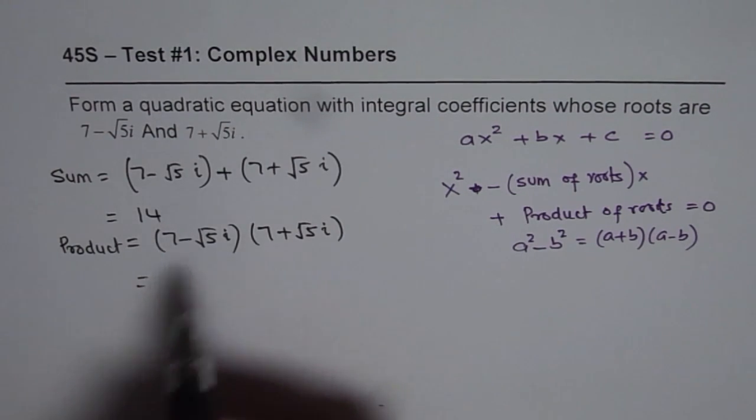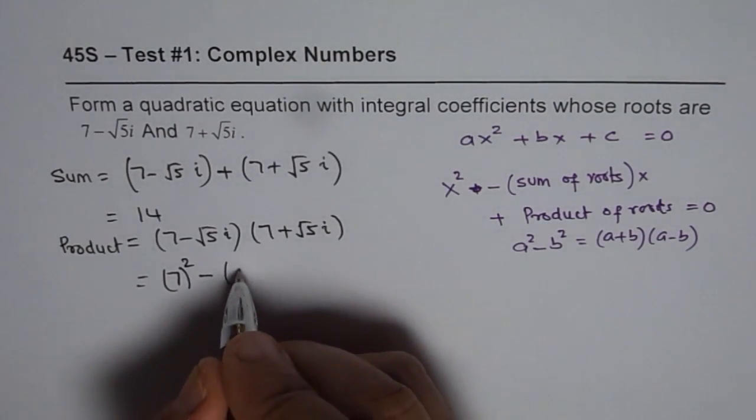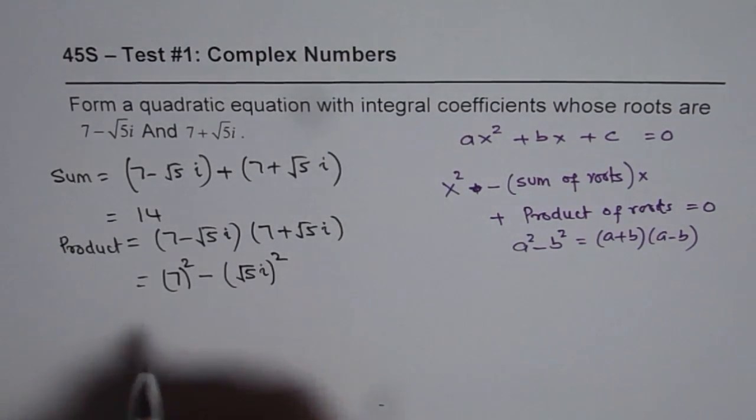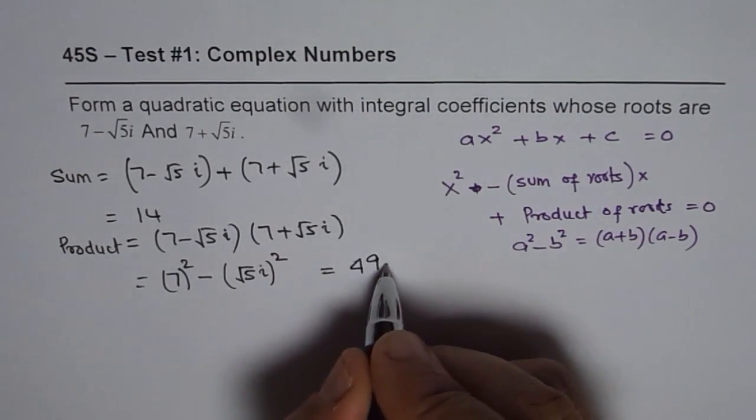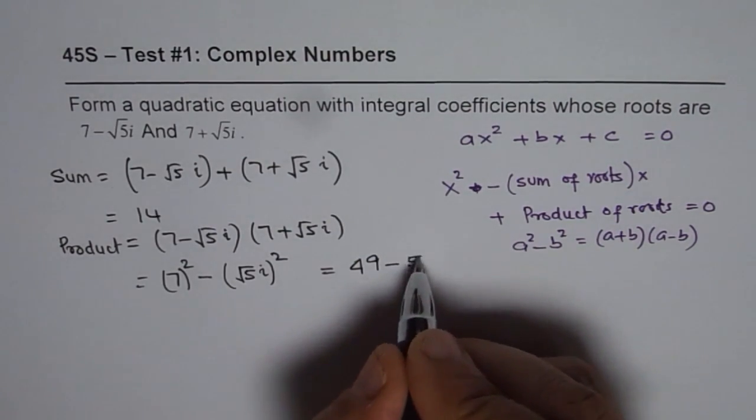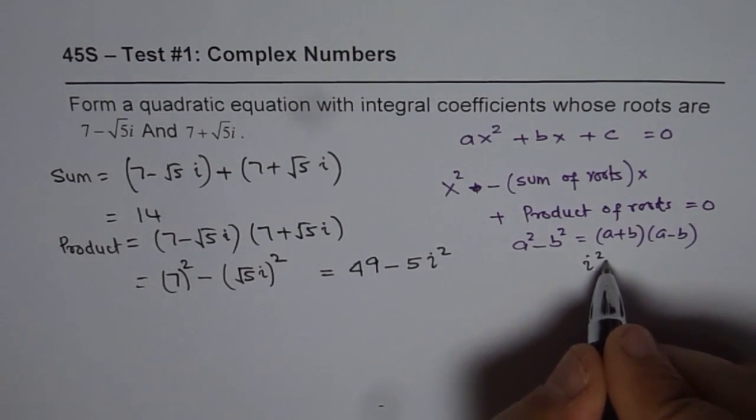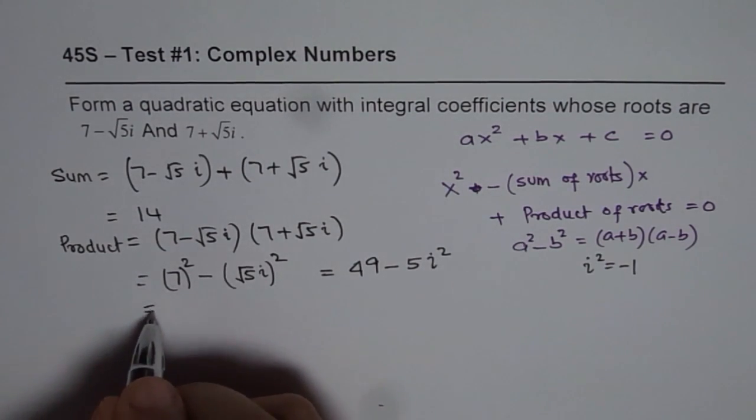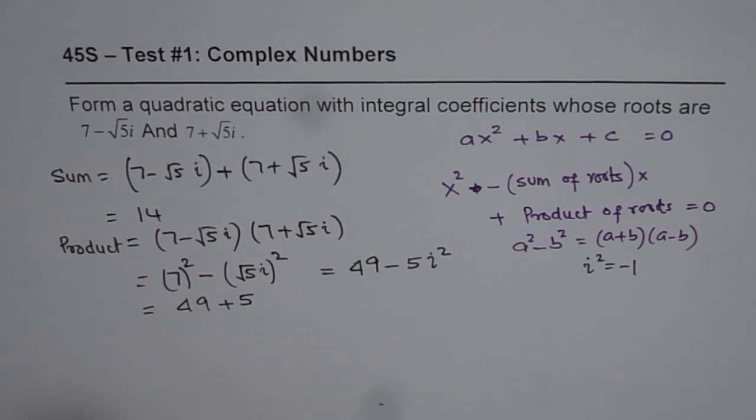So it is 7 square minus square of 5i. That gives us 7 square is 49 minus 5 square root square is 5 and i square. Now as you know, i square is minus 1. Substituting that, we get product as 49 plus 5, since i square is minus 1.